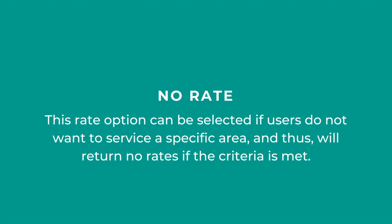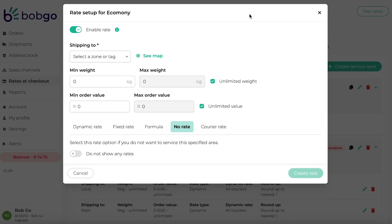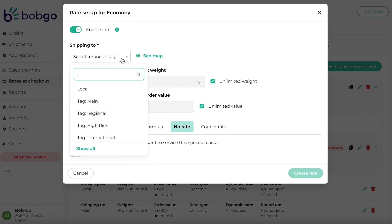The no rate option can be selected if you do not want to service a specific area. This means that no rates will be returned if the criteria is met. This rate type is often used by merchants who do not want to service a specific zone or tag, like international.